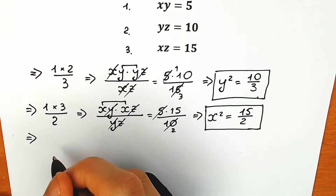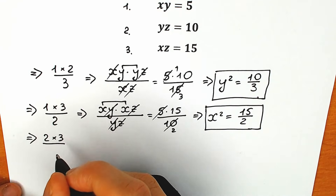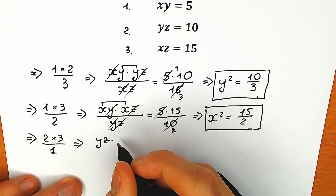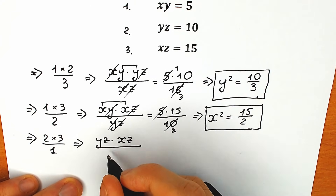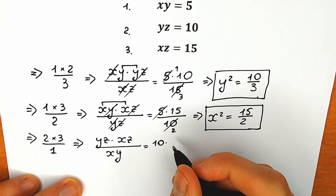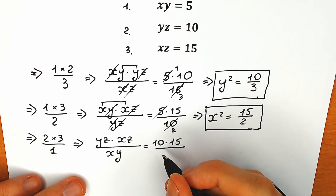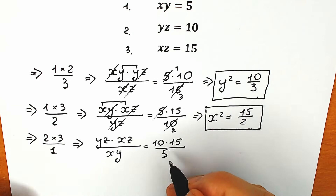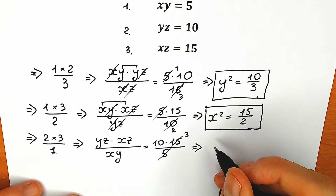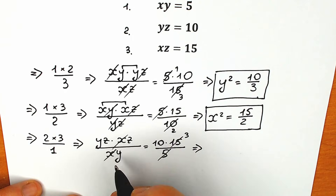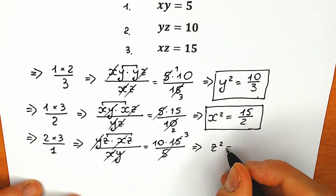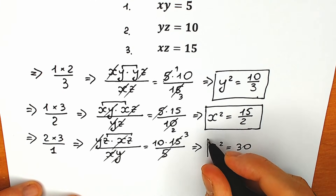The third and last combination: multiply the second equation by the third and divide by the first. So yz times xz all over xy equals 10 times 15 over 5. We cancel 5 and 15 to get 3, giving 10 times 3 equals 30. On the left, x and x cancel, y and y cancel, leaving z squared. So z squared equals 30.